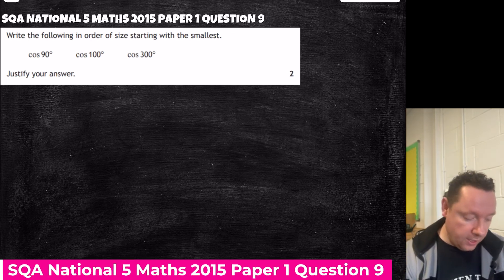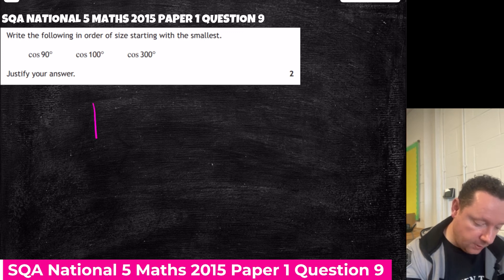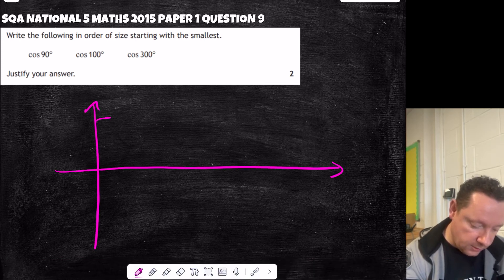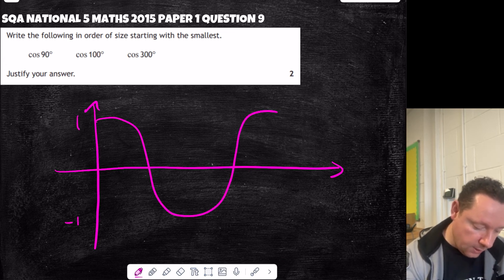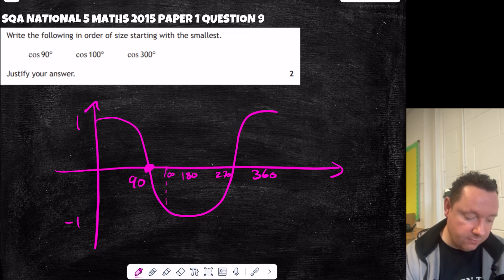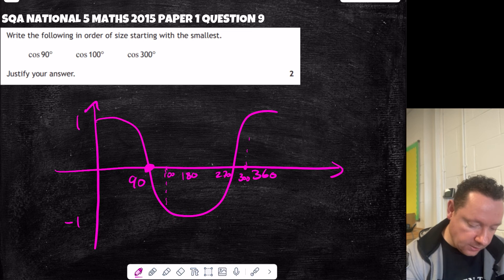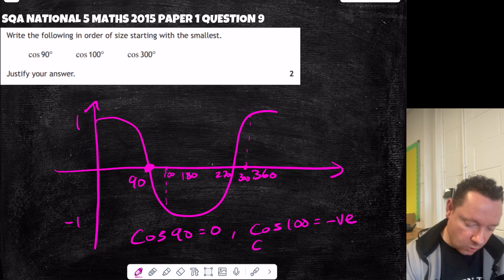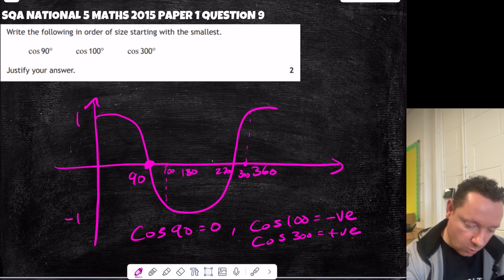National 5 Maths 2015 Question 9: put the following cosine values in order from smallest to biggest. Draw a standard cosine graph with key points at 90, 180, 270, and 360. cos 90 equals 0 — it's on the axis. cos 100 is just past 90 so it's a small negative value. cos 300 is in the fourth quadrant so it's a positive value. In order from smallest to biggest: cos 100, cos 90, cos 300.